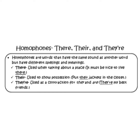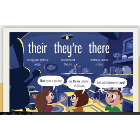Their, there, they're. Homophones are words that have the same sound but different spelling and meaning. These three words have the same sound but different meanings. You don't pronounce them differently — all three are pronounced 'there'. Remember these three words. Same sound, different meaning, but same pronunciation. The pronunciation is 'there'.